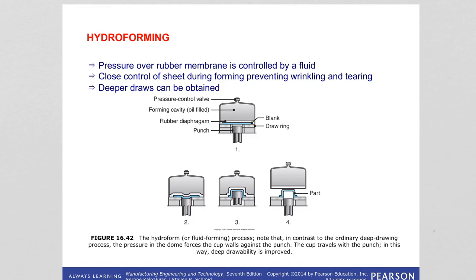There is also hydroforming. In this case the pressure over the rubber membrane is controlled by fluid. This method allows for deeper draws to be obtained compared to conventional deep drawing, because the pressure around the punch is controlled. You can see the forming cavity, the rubber diaphragm, and the punch — the fluid is controlling the pressure.